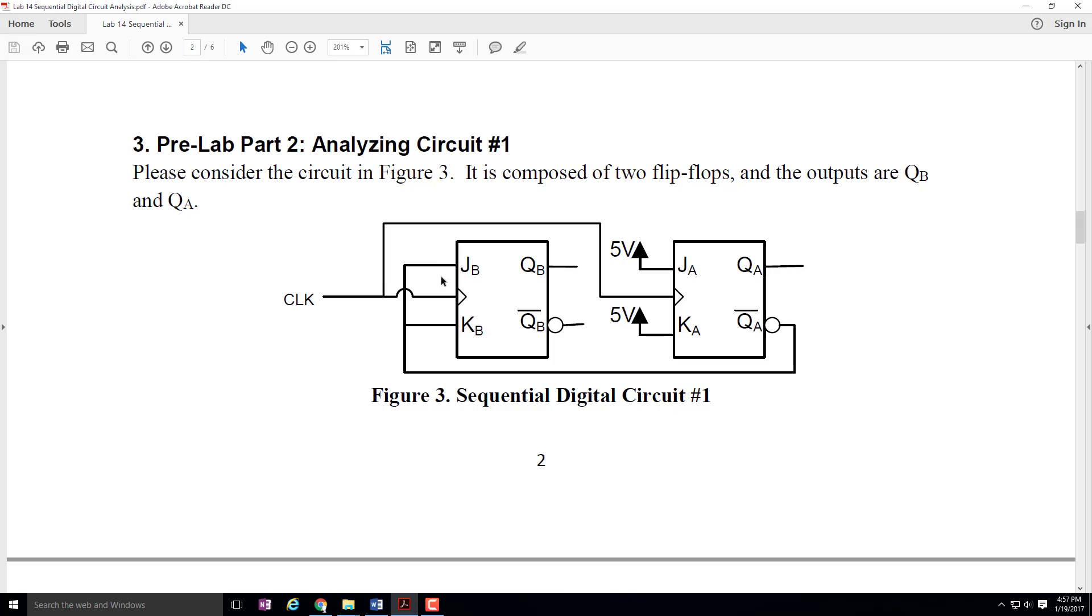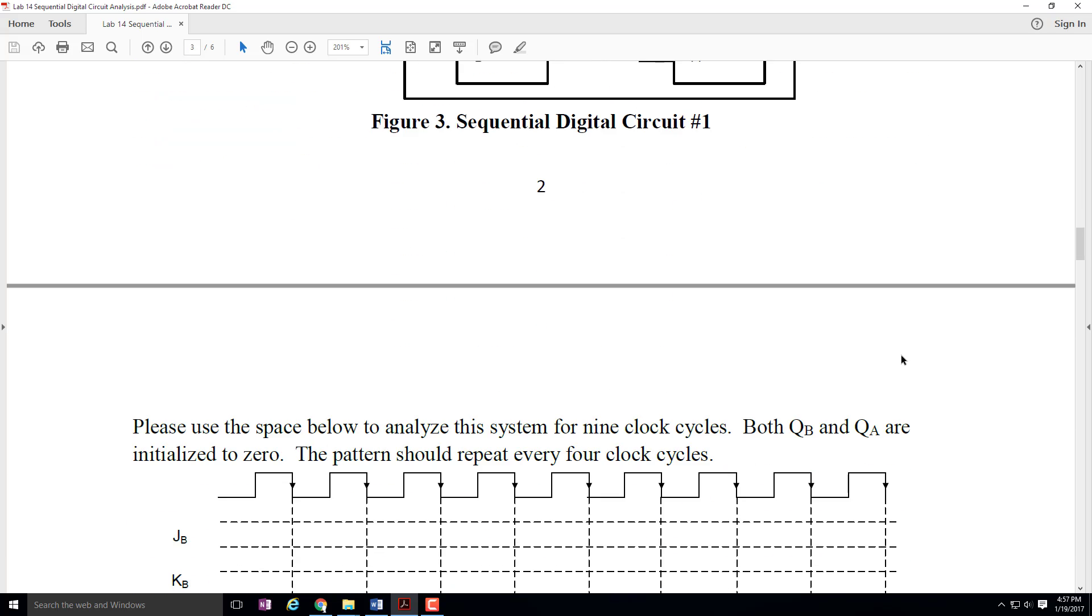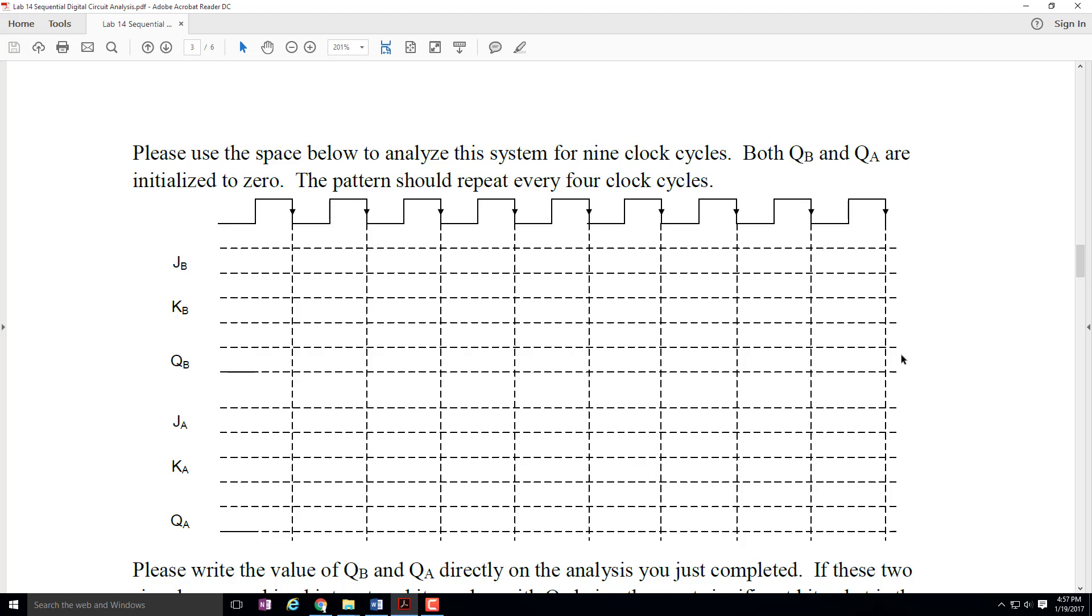Over here for J sub B and K sub B, they are both connected together, and they are both connected to Q sub A bar. Now, if you can do it in your head, you can figure out exactly what pattern of ones and zeros this is going to generate. I can't do it in my head, so that's why I've provided you with this space right here to do it.